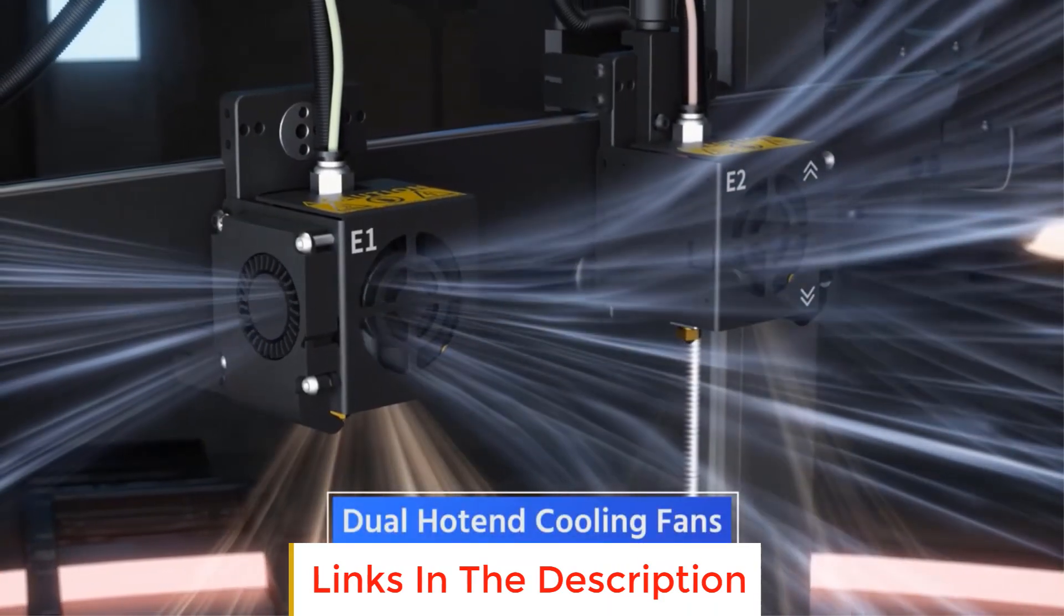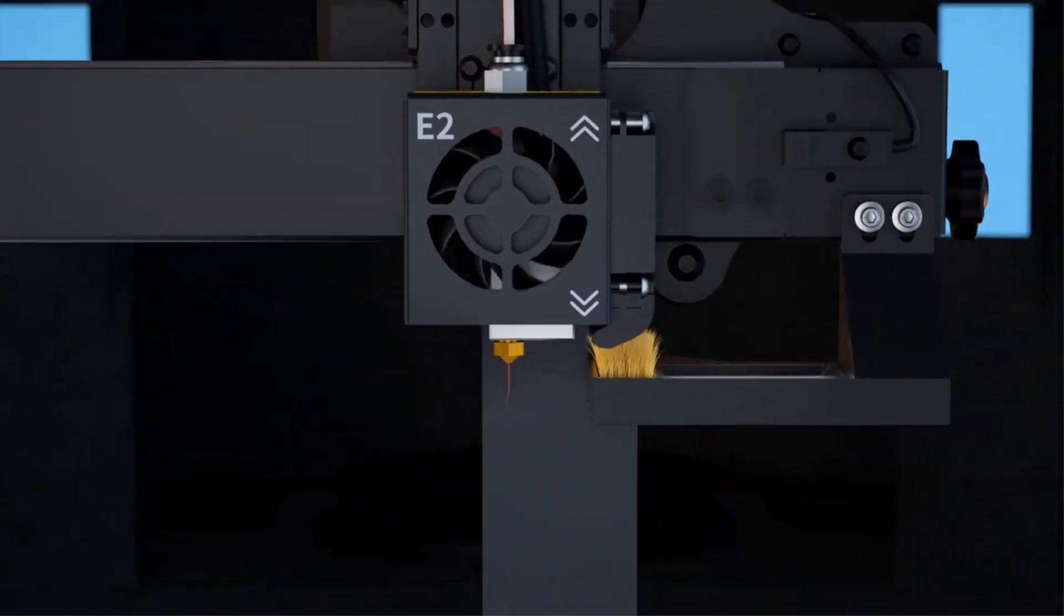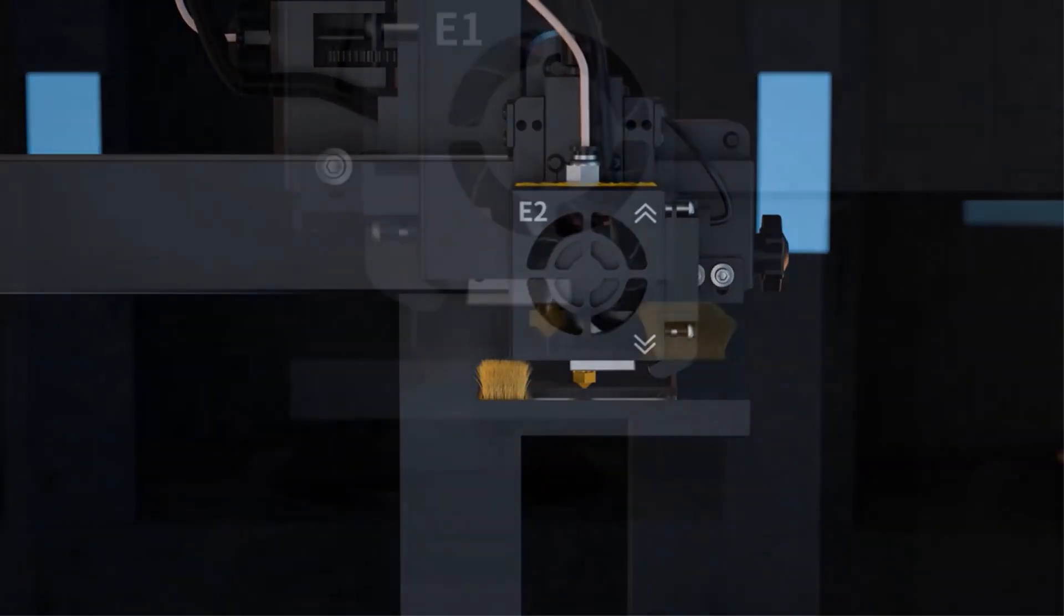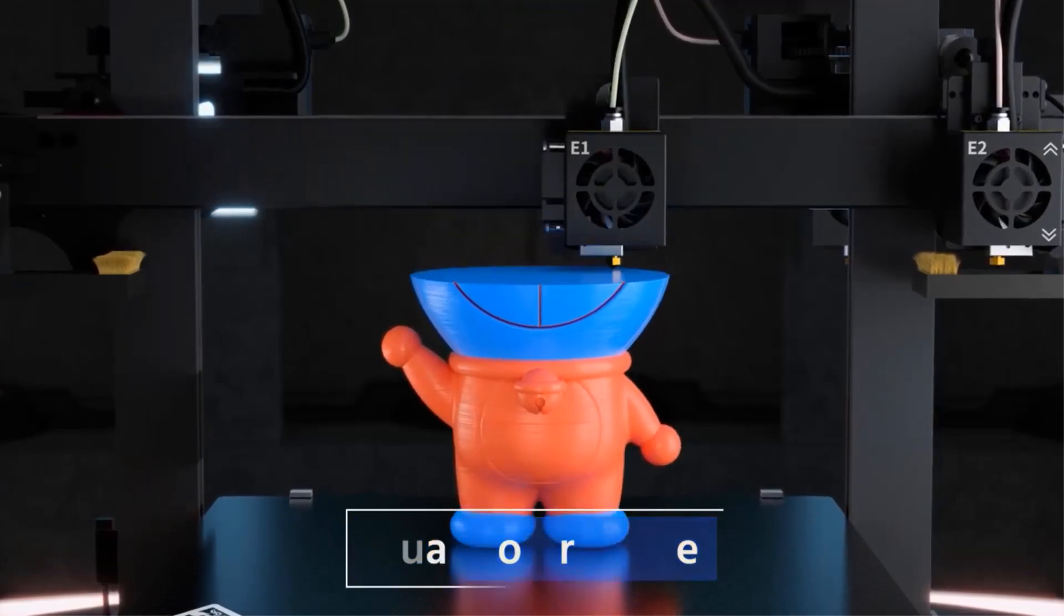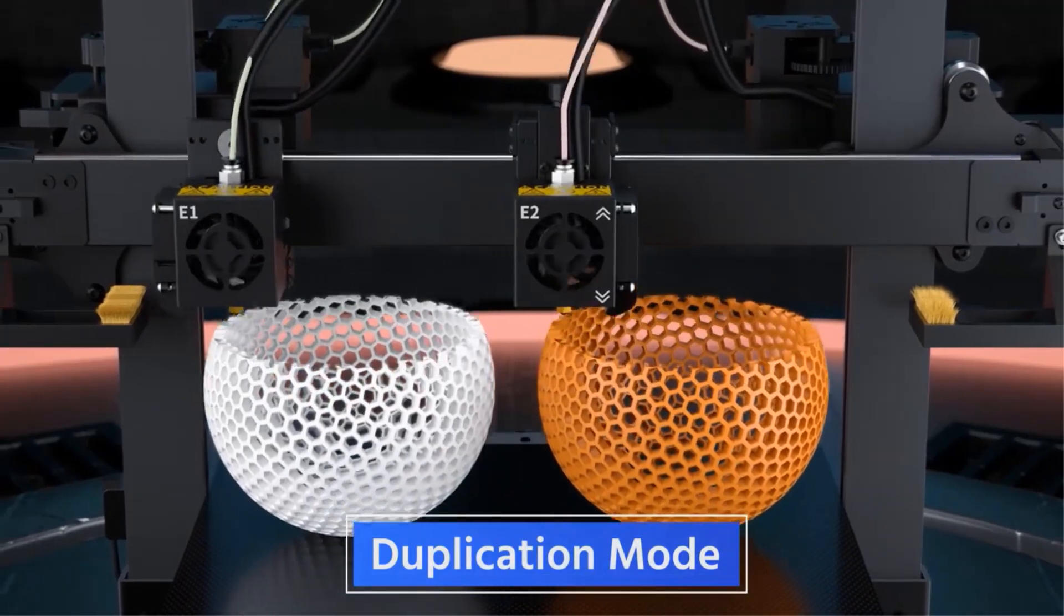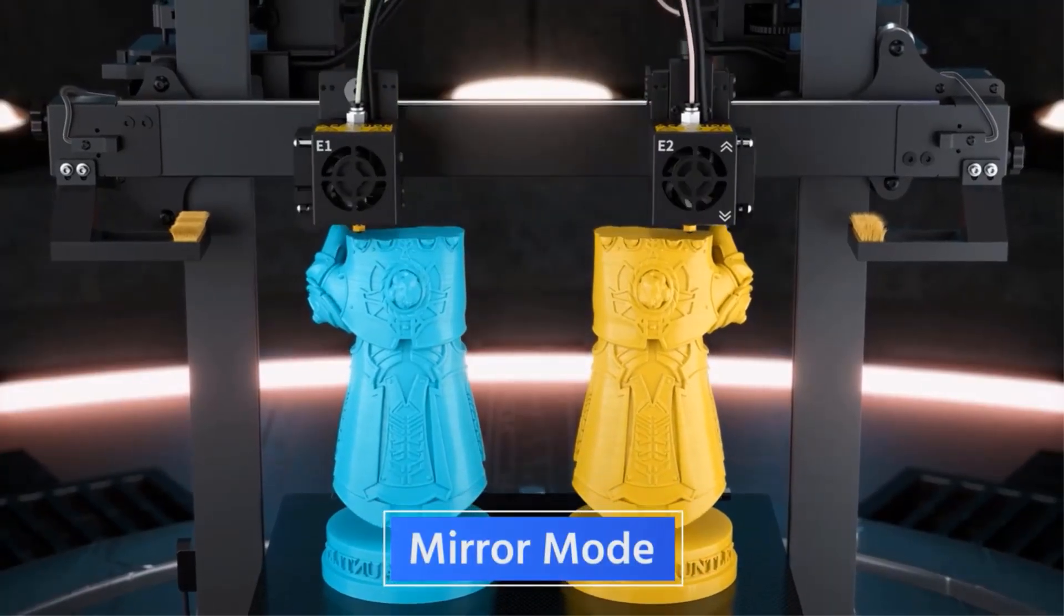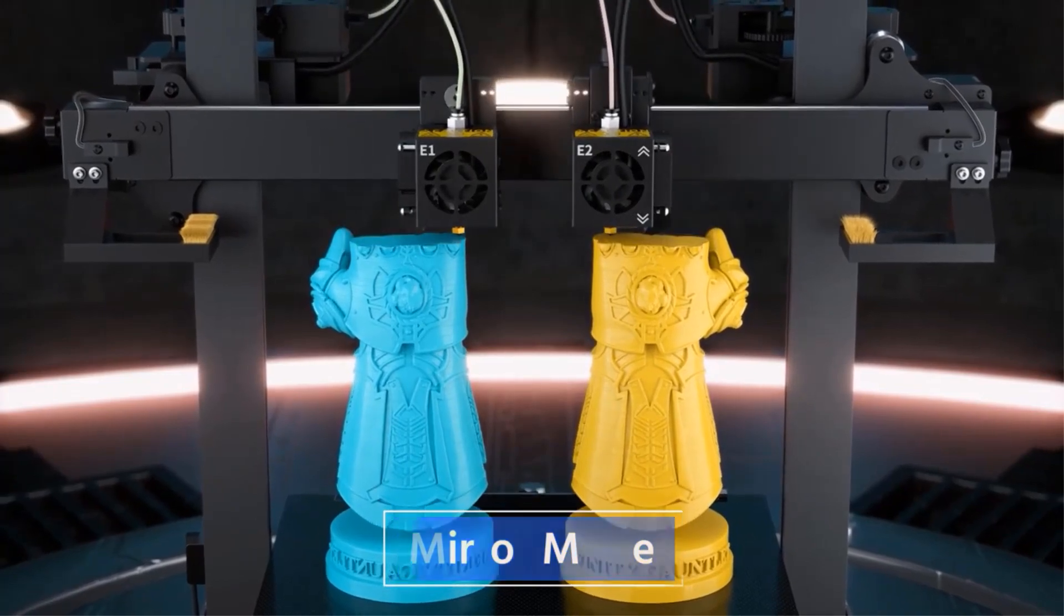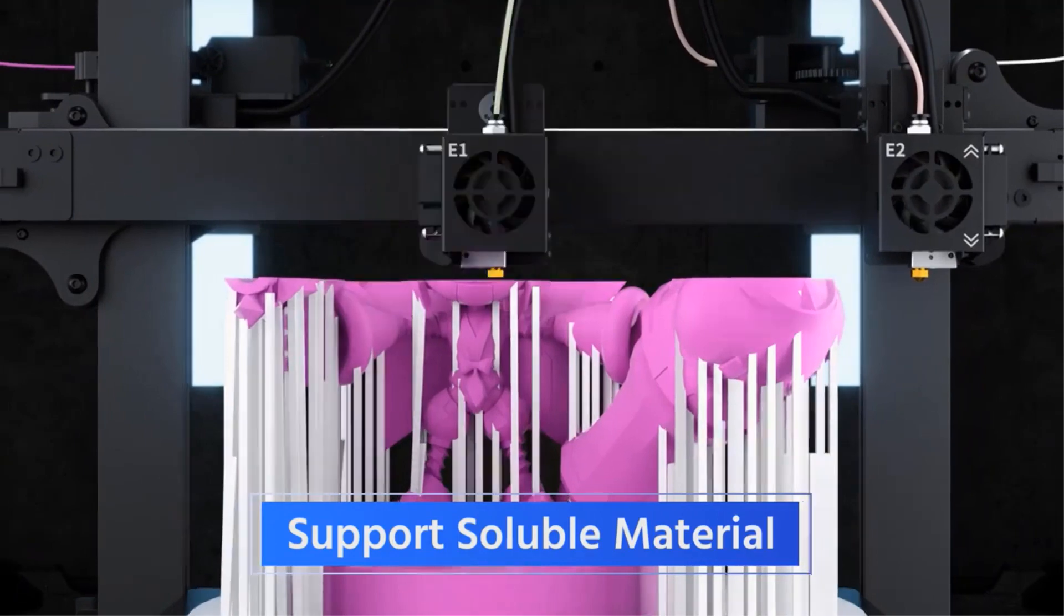With its two-head dual extrusion system, this printer enables simultaneous printing with two different colors or materials, providing users with more creative possibilities. The Gemini XS boasts an independent dual extruder setup, which ensures precise and efficient printing. Each extruder operates independently, minimizing the risk of filament interference and allowing for greater design flexibility.